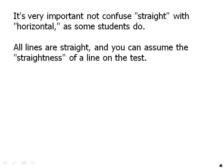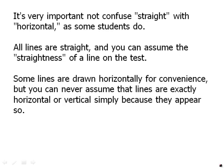That is always true on the test. But some lines are drawn horizontally for convenience. But you can never assume that lines are exactly horizontal or vertical simply because they appear so. Now people get really confused on this. If you think that horizontal and straight mean the same thing, then when we say you can assume from the test that lines are straight, people mistakenly assume that this also means they can assume lines are horizontal. And that is not correct.